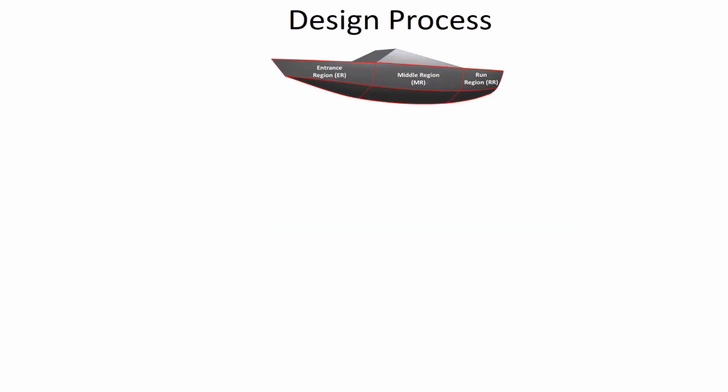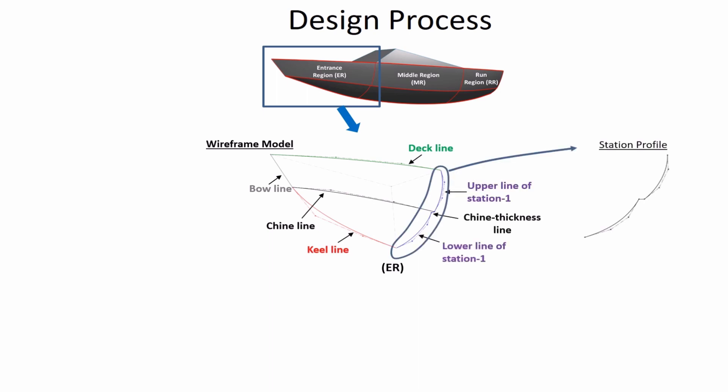Each region of the hull is formed by creating independent feature curves which represent the characteristic features of the hull. For example, the entrance region consists of deck line, bow line, chin line, keel line, and upper and lower lines of station 1. Accordingly, the other regions are created.